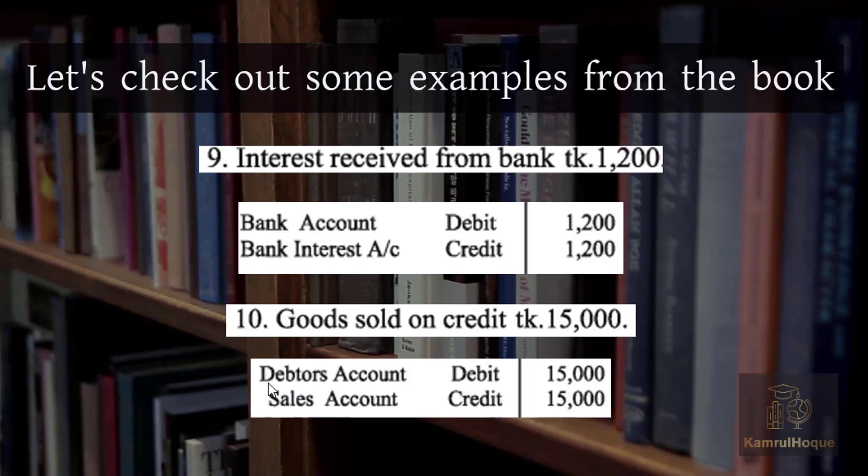For example, Debtors by Accounts Receivable: the Debtors Account is debited, and Sales and Revenue is credited.